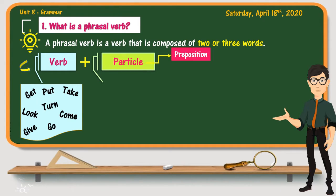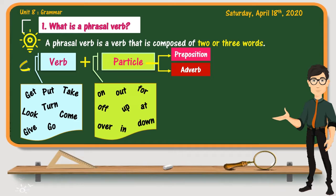A particle is a short word, like a preposition or an adverb. Examples of particles include: on, out, for, off, up, over, in, at, down, after, etc.